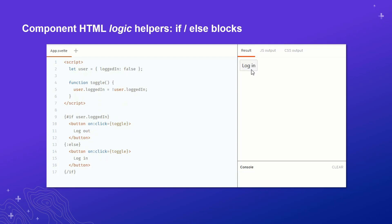In this other component, we have a script tag with the variable user set to an object with a loggedIn property defaulting to false. We then set up a function named toggle whose only job is to flip the value of user.loggedIn from false to true and back again. Beginning on line nine is our HTML markup. If user.loggedIn is true, we show a button with an onClick handler wired up to the toggle function, and its contents will be 'log out.' Otherwise, if user.loggedIn is false, we show the login button, also wired up to the toggle function.